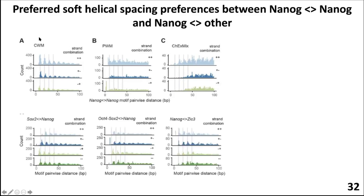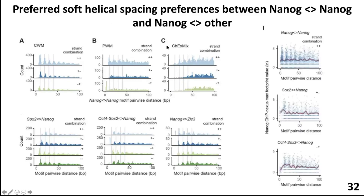Between SOX2 and NANOG, or OCT4-SOX2 hybrid and NANOG, a 10 base-pair spacing preference is observed. When instances of the NANOG motif co-occur at 10 base-pair spacing, you get much stronger ChIP-nexus signal. This 10 base-pair periodicity is consistent with NANOG being a homeobox transcription factor that tends to bind nucleosomal DNA, where helical periodicity matters because of how DNA wraps around the nucleosome — validated by independent in vitro and ChIP data.